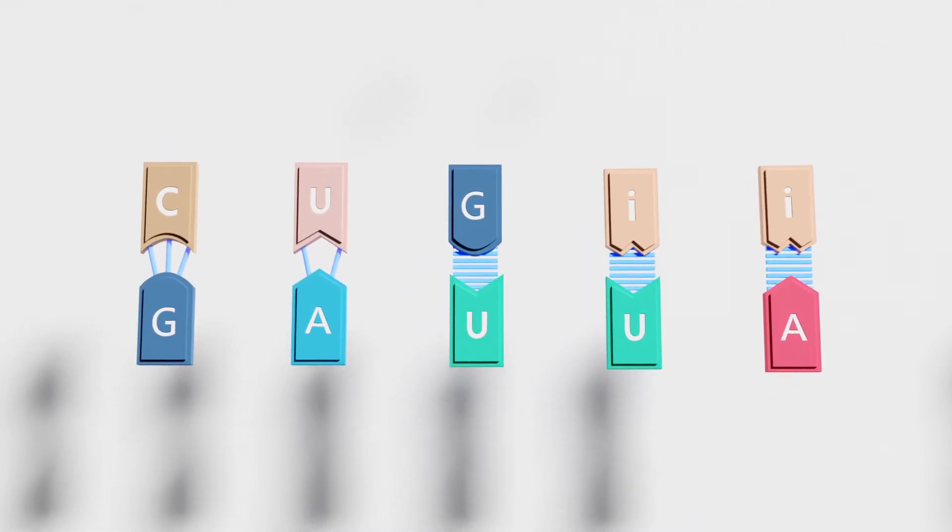Contrastingly, he deemed G and U, I and U, and I and A pairings possible, as they could form necessary hydrogen bonds and didn't require wobbling far from the standard position.